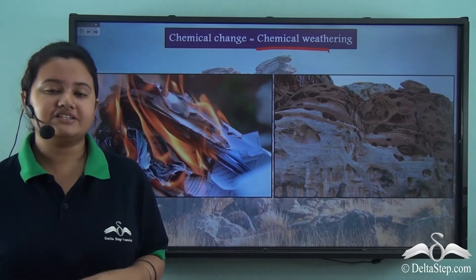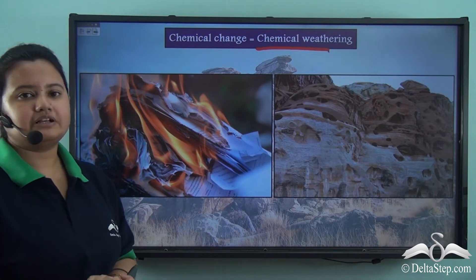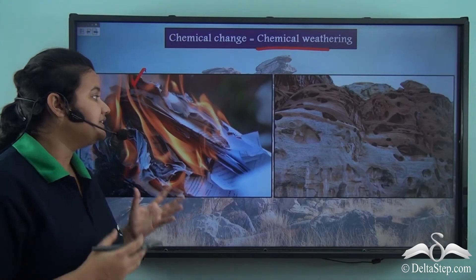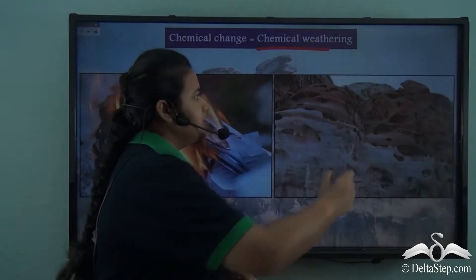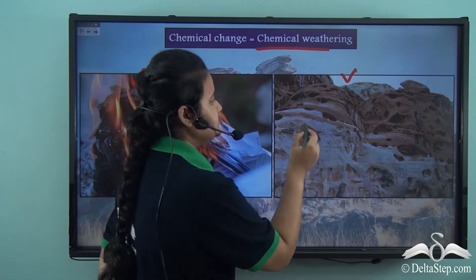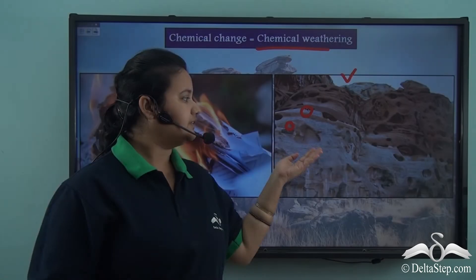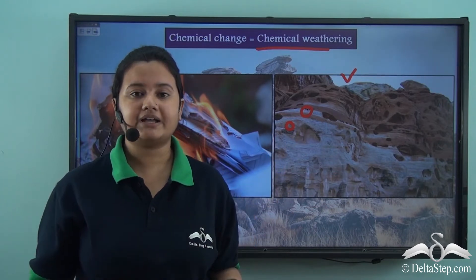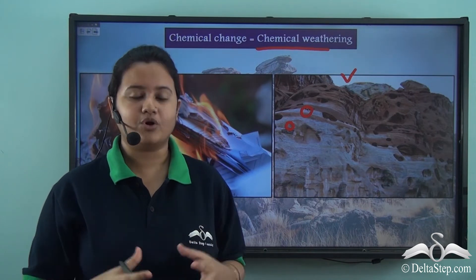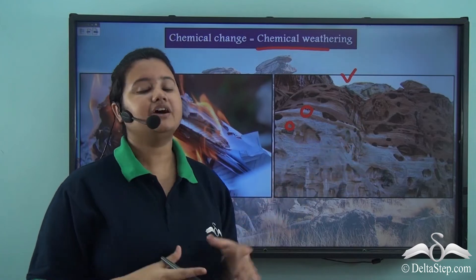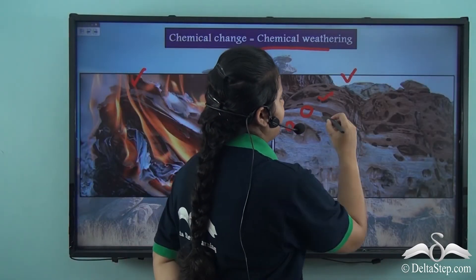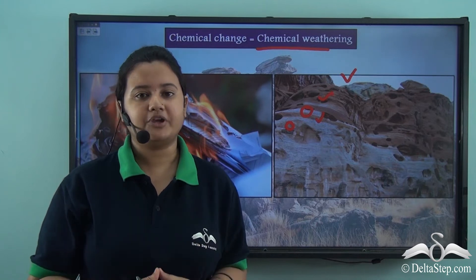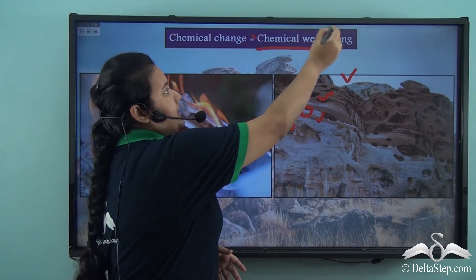Chemical weathering is very similar to chemical change. This picture depicts a chemical change where a paper turns into ashes due to a chemical reaction. Now look at this picture — we can see holes in the rocks. These holes are present on the rock surface because the minerals present in the rocks have chemically reacted with atmospheric conditions like rain water and have been washed away, leaving the holes in the rocks. So the colour and texture of these rocks represent that they have undergone a chemical transformation, which is called chemical weathering.